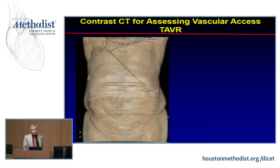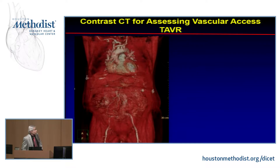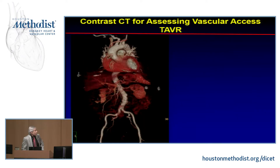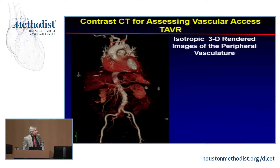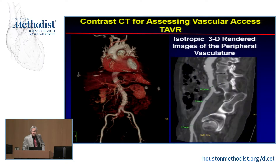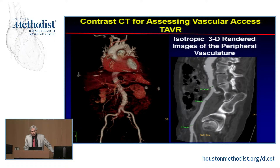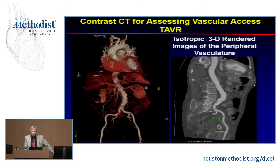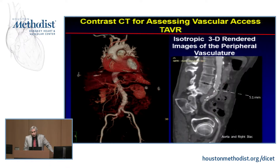CT also allows us to look at the entire vasculature and assess access vessels extremely well, providing measurements as a roadmap for deployment of sheaths and the valve itself, as well as picking up aneurysms. CT is used primarily for this and also for annulus measurements.